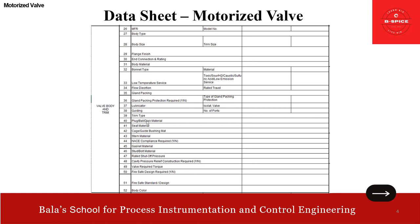Additionally for valve body and trim: plug/ball/disc material, seat material, gauge, guide/bushing material, stem material, NAS compliance if required, gasket material, stud bolt material, rated shutoff pressure, cavity pressure relief construction if required, required torque, fail safe design required or not, fail safe standard, and body color.